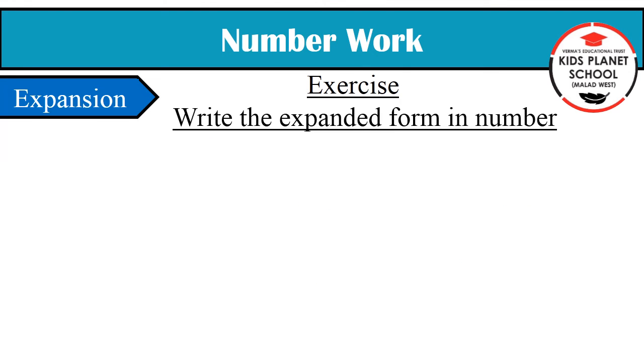Write the expanded form in numbers. Children, we have to write the number of the given expanded form. So let us start. Let us look at our first number that is 600. Children, with this we can understand that our number began with the position of 100. Now we have written the positions to form the number.